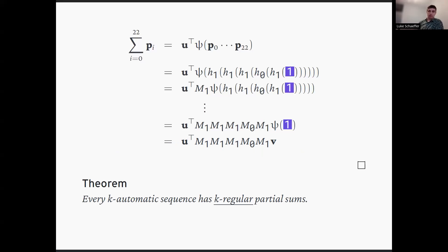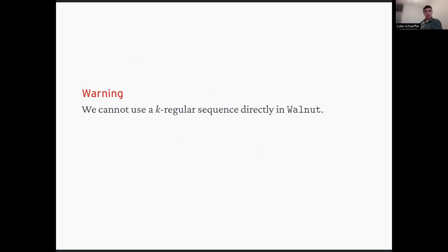That proves the theorem: every k-automatic sequence has k-regular partial sums. Unfortunately, a k-regular sequence isn't something we can use directly in Walnut. It's good for understanding the sequence and computing specific terms quickly, but in terms of mechanical proof it's not much help.